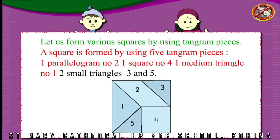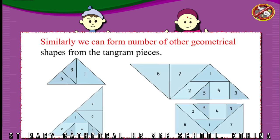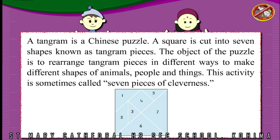A square is formed by using five tangram pieces: one parallelogram number two, one square number four, one medium triangle number one, two small triangles three and five. Similarly we can form a number of other geometrical shapes from the tangram pieces.